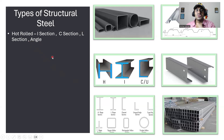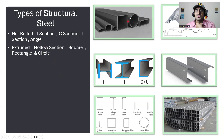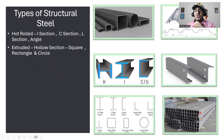After that we have extruded sections like hollow sections. You can see these hollow sections — in that we have square section, rectangular section, and circular section. All these are your hollow sections. This is square in shape so it's a square section, this is a rectangular section, and this is a circular section. We call this as an extruded section.